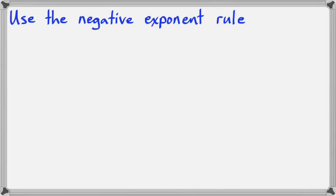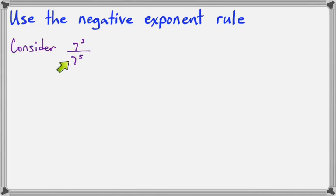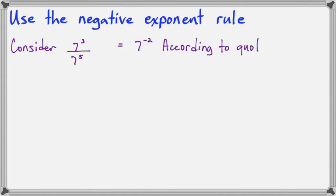In this lesson, we're going to talk about how to use the negative exponent rule. Think about a problem that says 7 to the 3rd over 7 to the 5th. Now, according to the quotient rule, we should be able to say 3 minus 5 is negative 2, so 7 to the negative 2 is what we get.